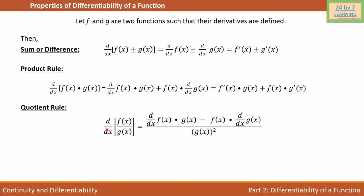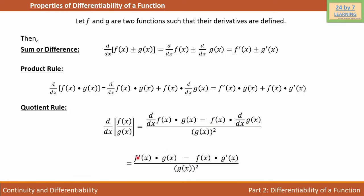Quotient rule: d/dx of f(x) over g(x) is equal to d/dx of f(x) times g(x) minus f(x) times d/dx of g(x), all over g(x) squared. It simply means f'(x) times g(x) minus f(x) times g'(x), over g(x) squared.